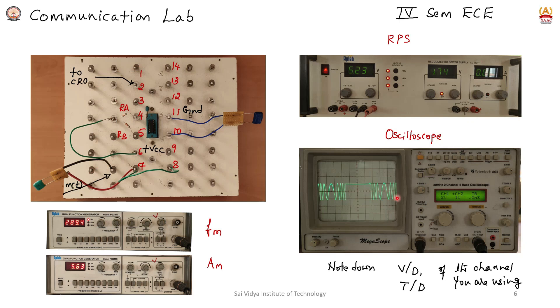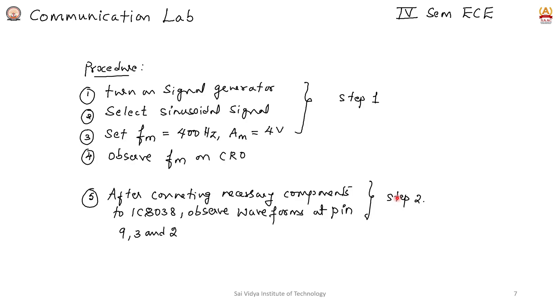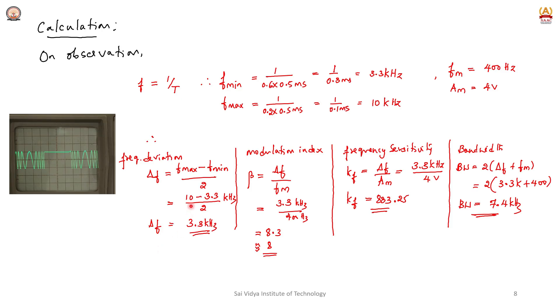These two values are essential to calculate frequency deviation. When the circuit is ready, turn on the signal generator and adjust the message signal to 400 hertz with 4 volts peak-to-peak amplitude. Observe the waveform on the CRO. Turn on 12 volts and observe waveforms at pins 9, 3, and 2, noting the readings.